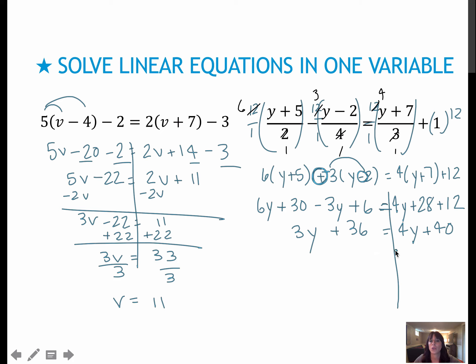And now I'm going to subtract the 3y this time. It would work either way. In this case, I have 36 equals y plus 40. Subtract the 40 and get negative 4 equals y.